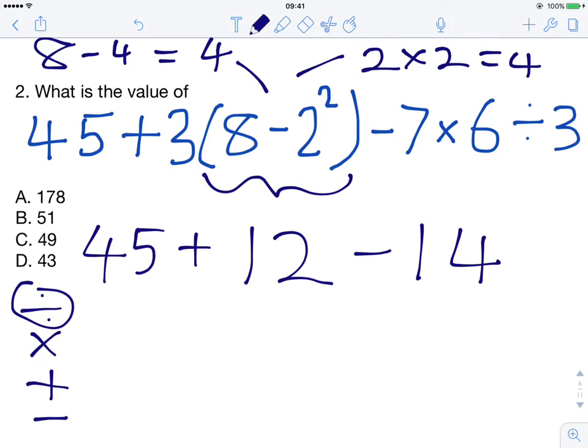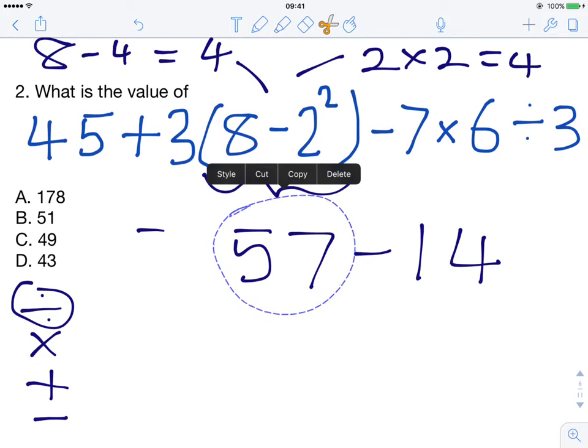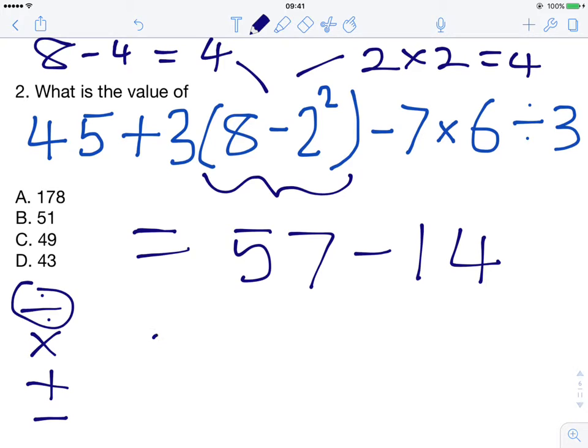We can do that pretty easily. 45 add 12 is 57. Now we have something much easier to solve. All this is really equal to 57 minus 14. And 57 minus 14 is 43. The answer is 43. That is option D.